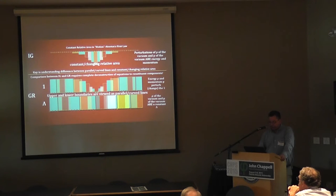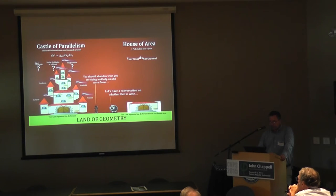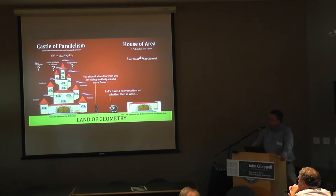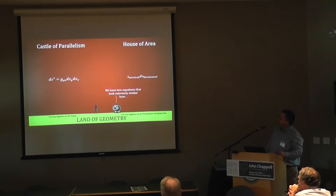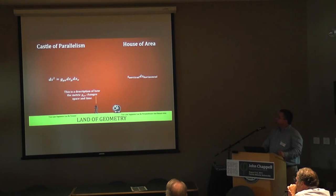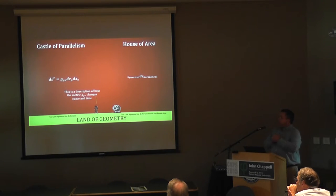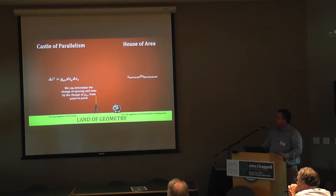So on the castle of parallelism, my little sheep character is going to start talking to the parallel guy. The castle of parallelism guy will say, 'You seem to be a little decent in geometry — why don't you come help us add in the floors?' The sheep understands he has an equation with a vertical line segment and a horizontal line segment, and there's the other ds-squared equation. The parallel guy says this is a descriptor of the metric: g_μν changes space and time, so ds-squared from point to point changes if g_μν changes.